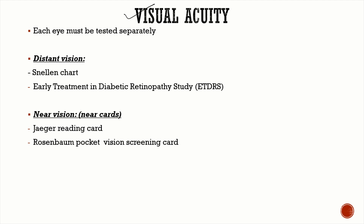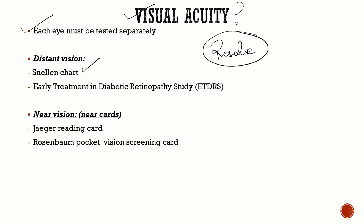Visual acuity is the ability of the eye to resolve images. We're going to measure this ability by checking each eye separately. For distant vision, we use the Snellen chart and the Early Treatment in Diabetic Retinopathy Study (ETDRS) chart. For near vision, we use near cards — commonly Jaeger's reading card and the Rosenbaum pocket vision screening card.